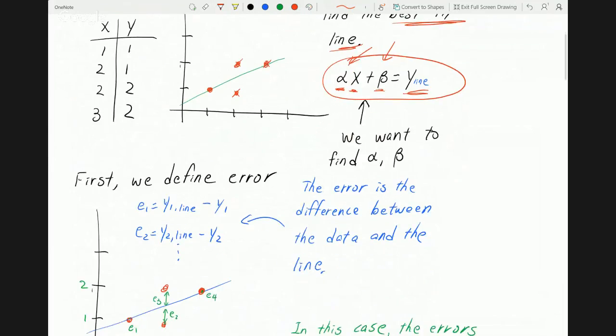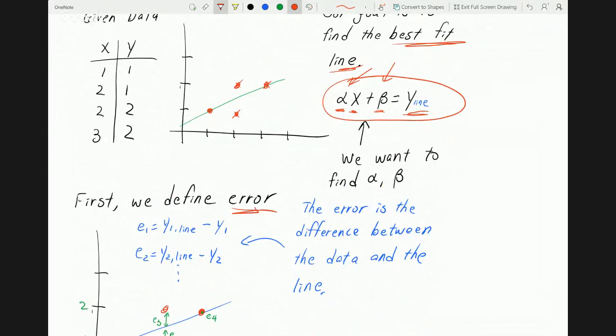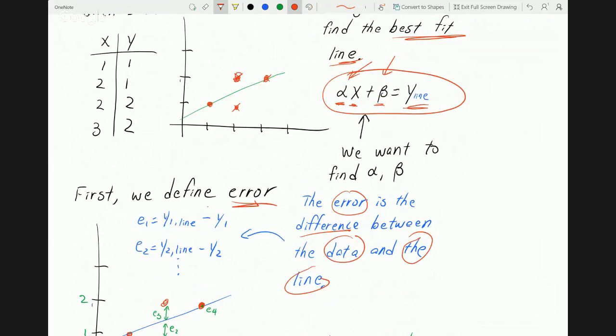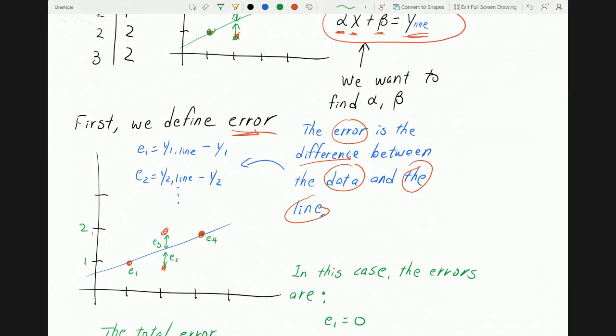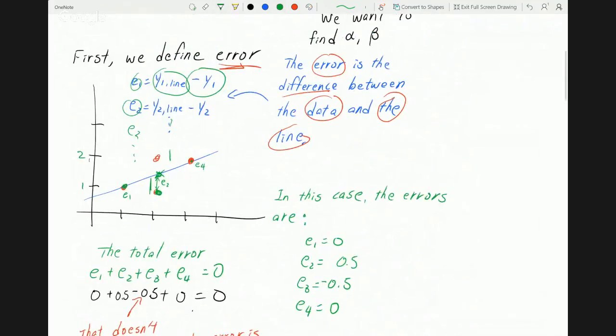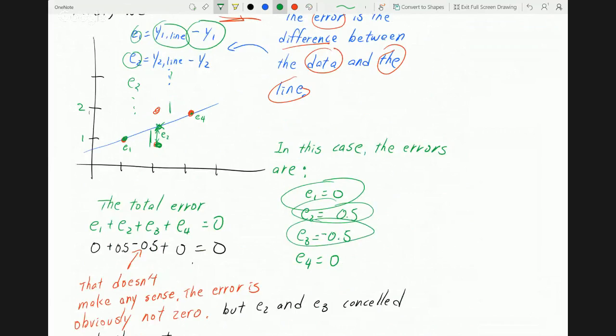First we need to define this thing called an error. The error is the difference between the data and the line. We have the data here and here's the line, and invariably it's going to have some difference, and we call that difference an error. An error is basically y1 of the line minus y1, and then y2 of the line minus y2. So this is e2 and so on, that's e1, e2, e3. In this case, the error for 1 is 0.5 minus 0.5.